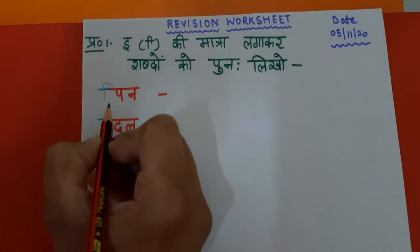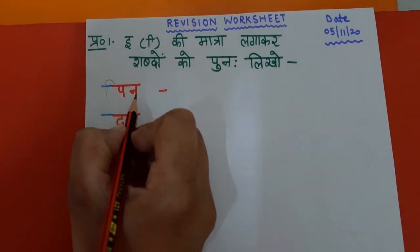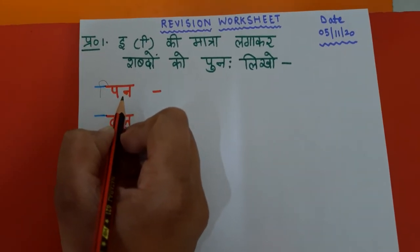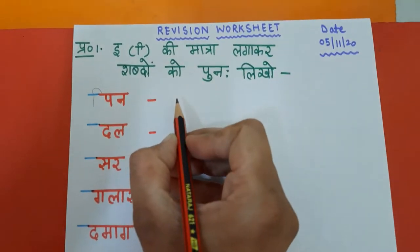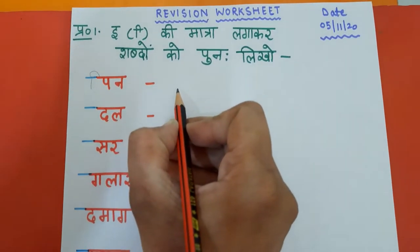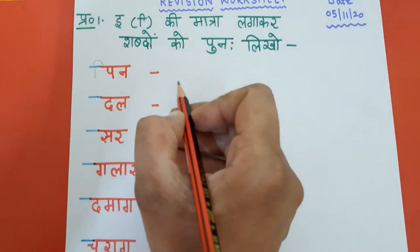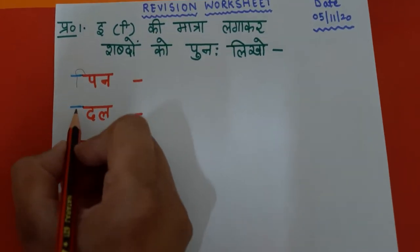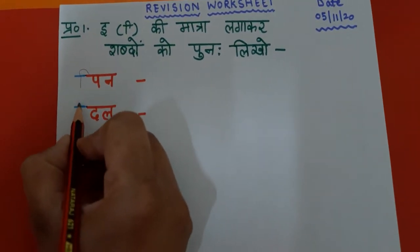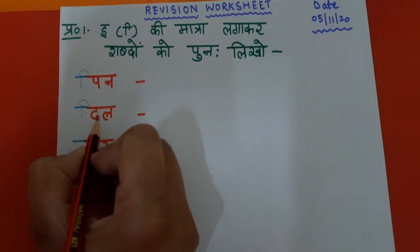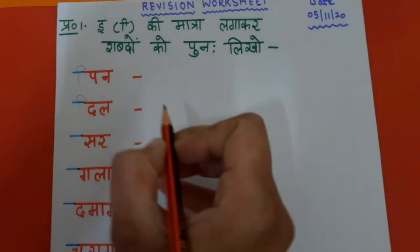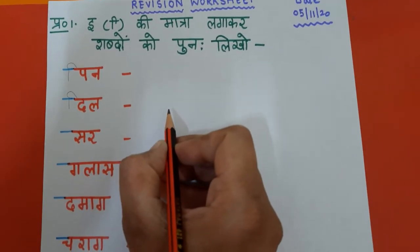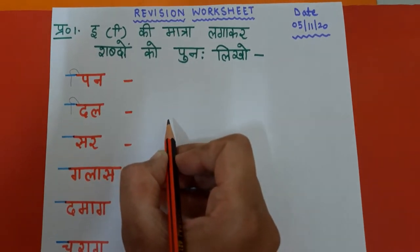Pop — appe chhoti E ki maatra pi, pin. Aapko yaha pe pin phir se likhna hai. Next, the — dappe chhoti E ki maatra di, dil. Yaha pe aapko fir se dil likhna hai.